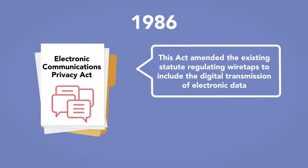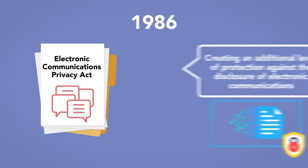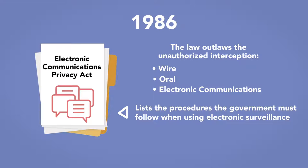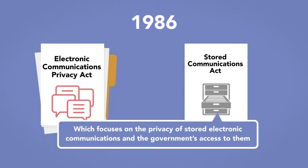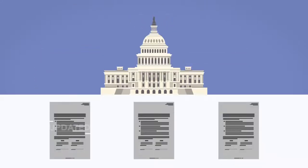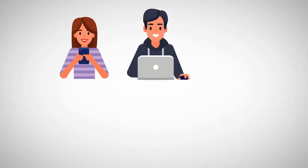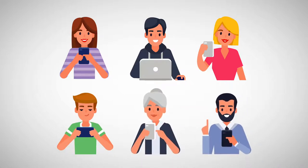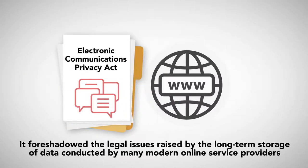The Electronic Communications Privacy Act amended the existing statute regulating wiretaps to include the digital transmission of electronic data, creating an additional level of protection against the disclosure of electronic communications. The law outlaws the unauthorized interception of wire, oral, or electronic communications and lists the procedures the government must follow when using electronic surveillance devices. The law also includes the Stored Communications Act, which focuses on the privacy of stored electronic communications and the government's access to them. Congress enacted the law to update federal privacy laws to reflect recent advances in electronic communication technology, including mass email, cell phones, computer-to-computer transmissions, and teleconferencing software.